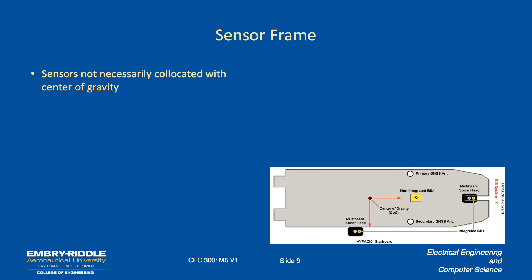Our sensors of interest aren't necessarily located at the center of gravity of the aircraft or vessel. In the illustration of a ship, one IMU pack is on the right side of the ship, another is forward, and a third is elsewhere — all displaced from the center of gravity. If there's any yaw about the z-axis, these sensors will measure angular displacements that depend on the rate of motion and the moment arm — how far each sensor is from the center of gravity. It is nice if the sensors align with the x, y, and z directions of the body frame, but if they're rotationally displaced, that's not the worst thing — you just need to resolve the components in each direction.